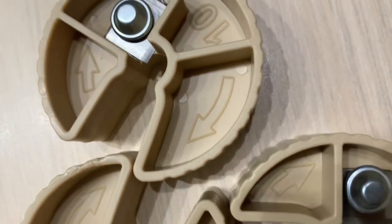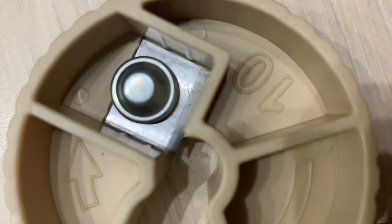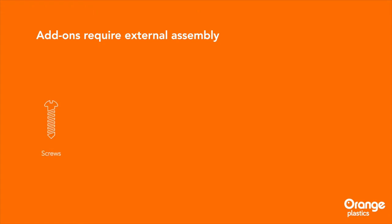On the other hand, many products require subtle add-ons that can't be added in the injection molding machine itself, such as screws, inserts, metal parts, strips and labels.